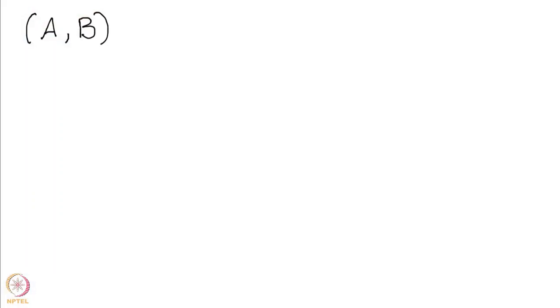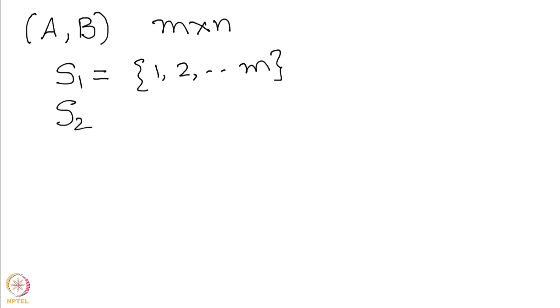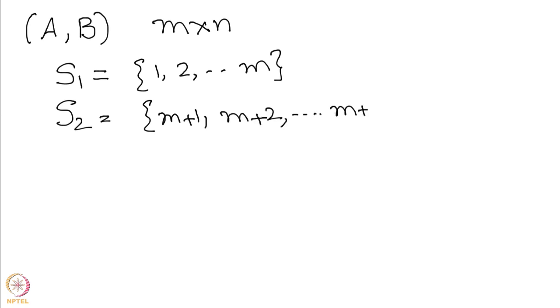First, to recap the notation. Let us say that we have this bimatrix game A, B of order m by n. That means player one has m pure strategies, which we write as 1 to m, and player two has n pure strategies, written as m+1, m+2, ..., m+n. This is for notational convenience.